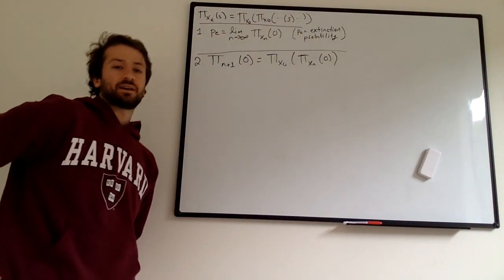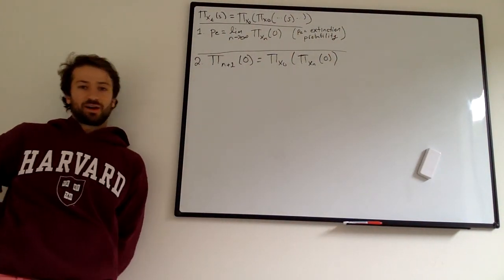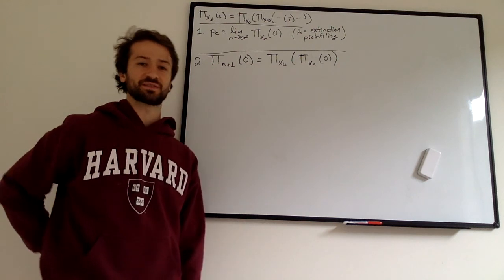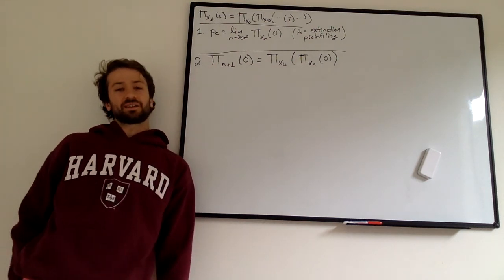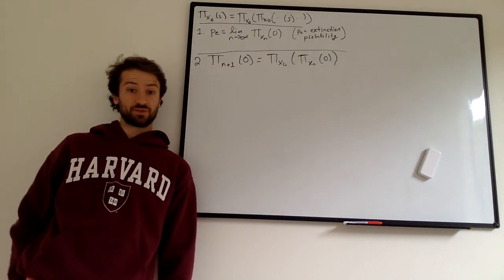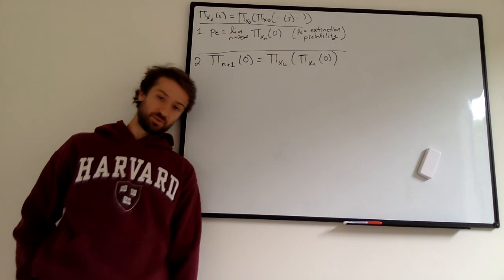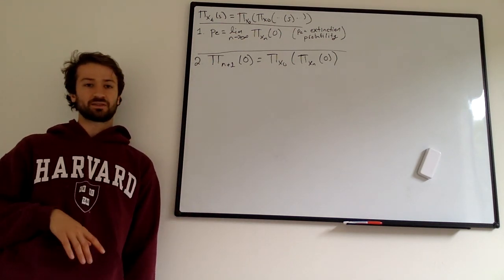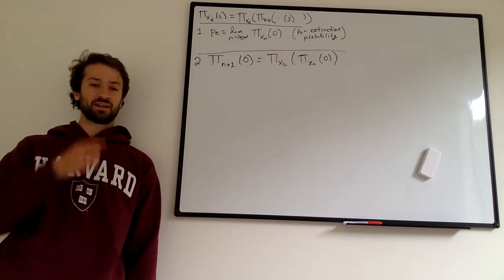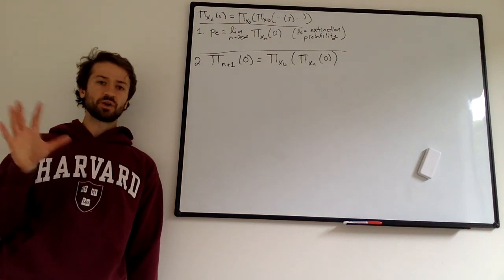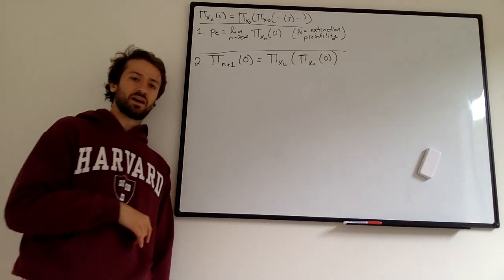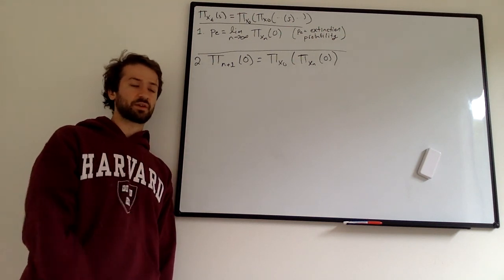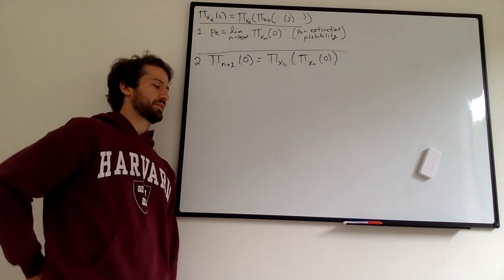So we're finally, after a lot of work on learning about probability generating functions and studying them, we're finally ready to actually put them to some good use when it relates to branching processes. That's what we're going to do in this video. This approach is influenced by some notes from a different class, linked below in the description as well as the other videos in this series.